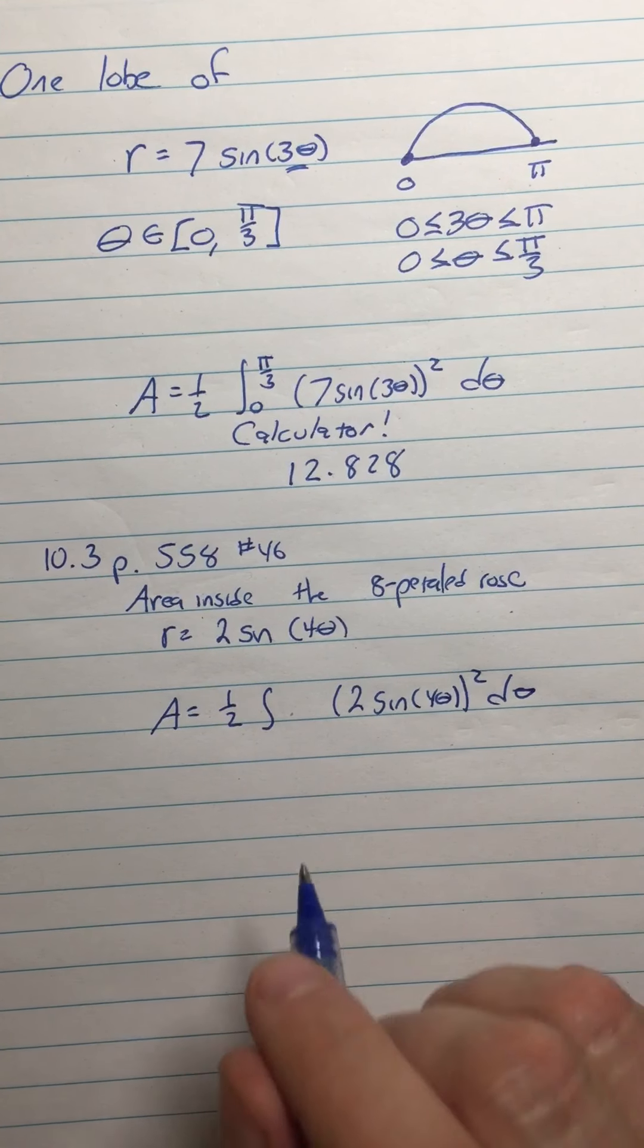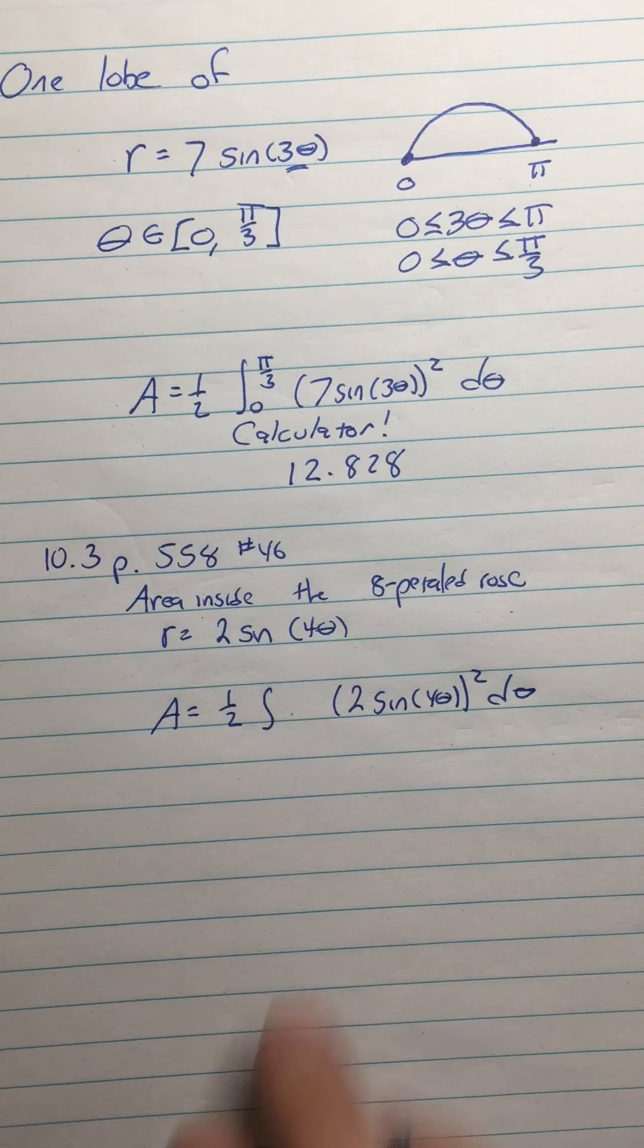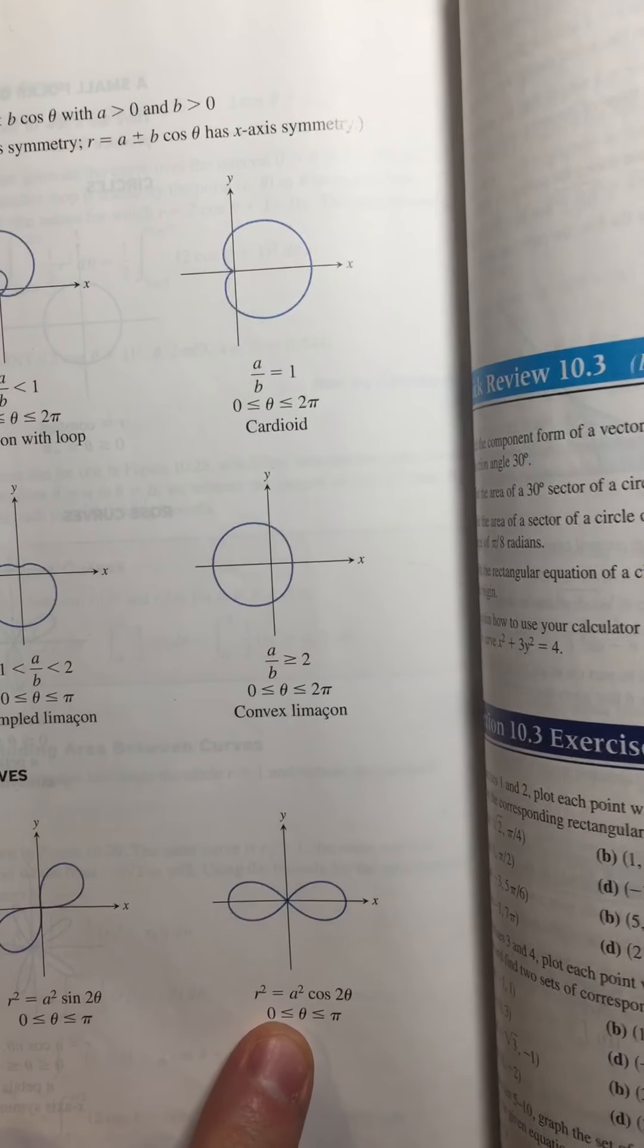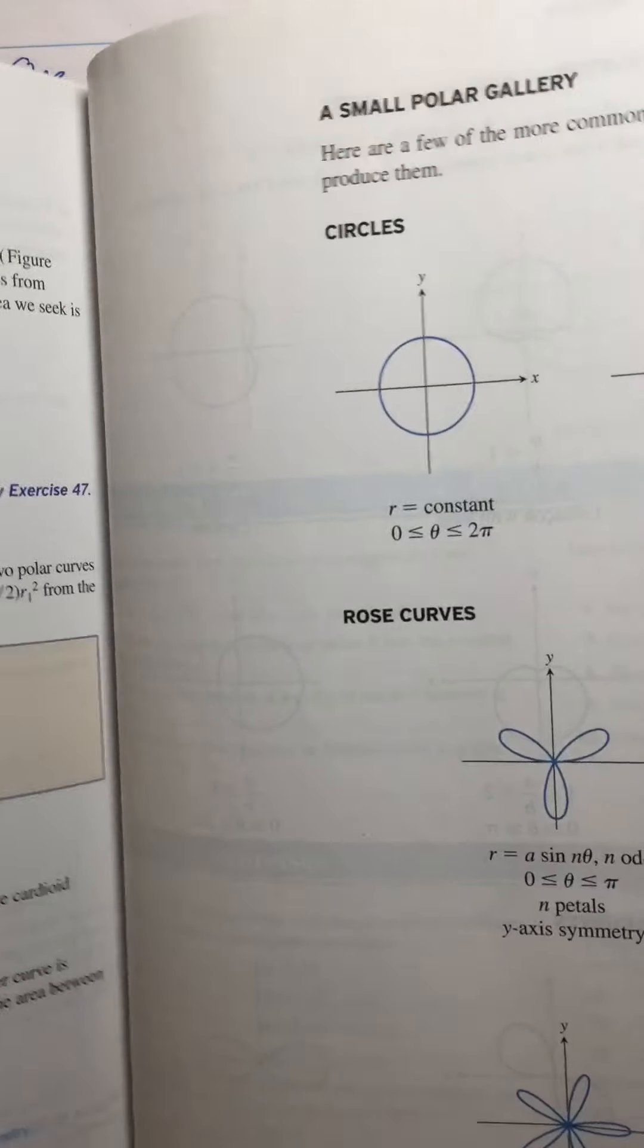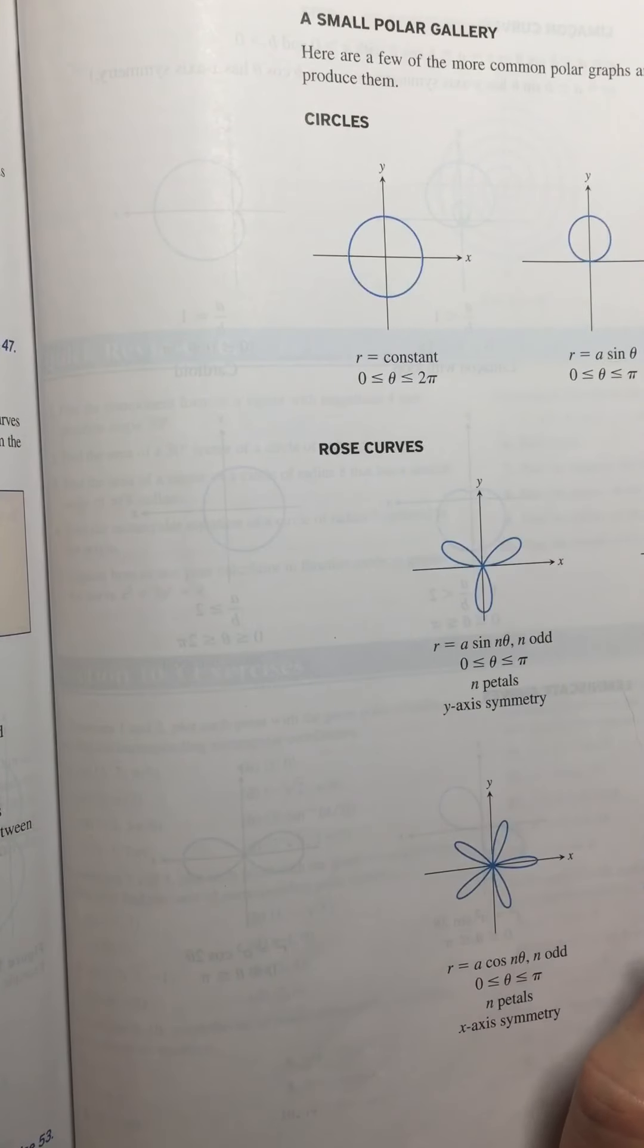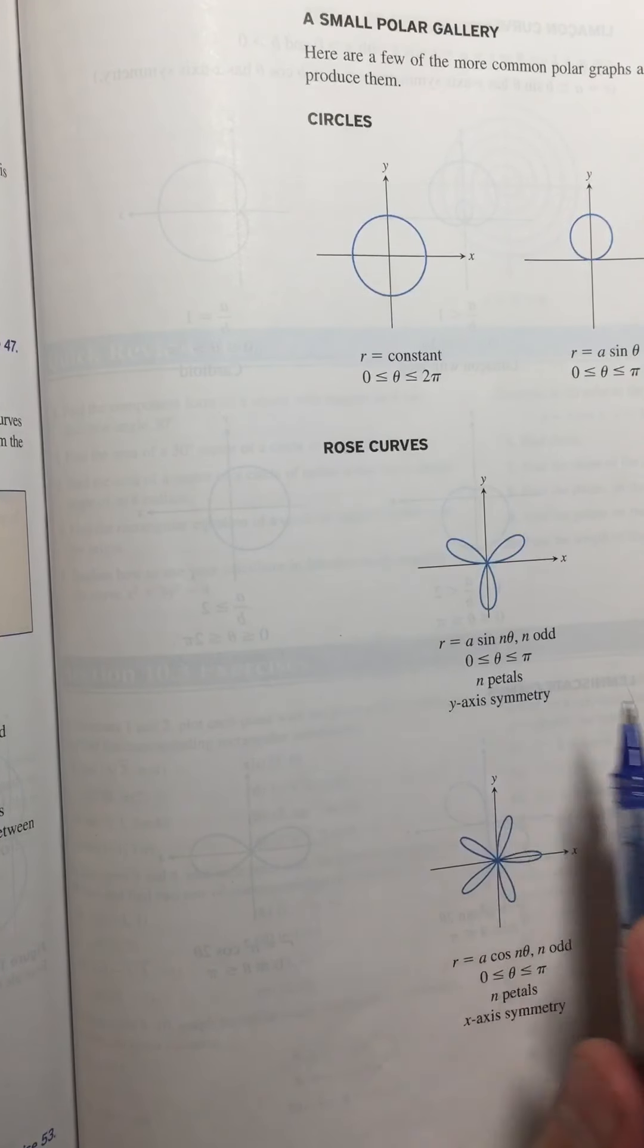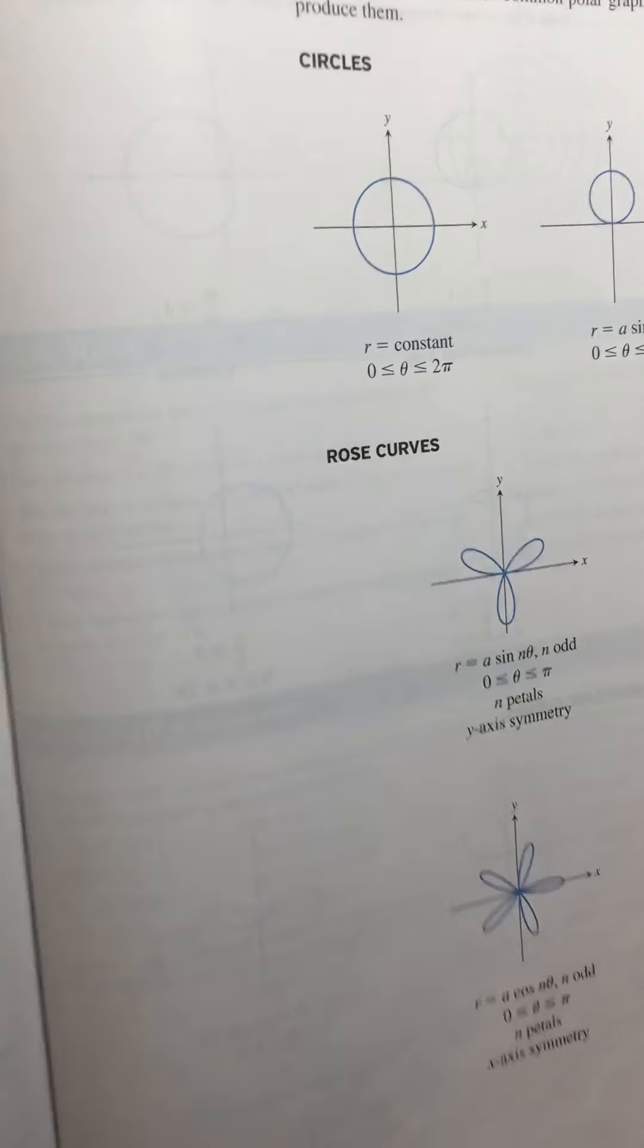One thing I could do is graph this in my calculator and use trace mode, but they gave me this hint that it's an eight-pedaled rose. Looking at the formulas, odd roses go zero to pi, even ones go zero to 2 pi. Since I have eight petals, it's even, so it's going to go zero to 2 pi.